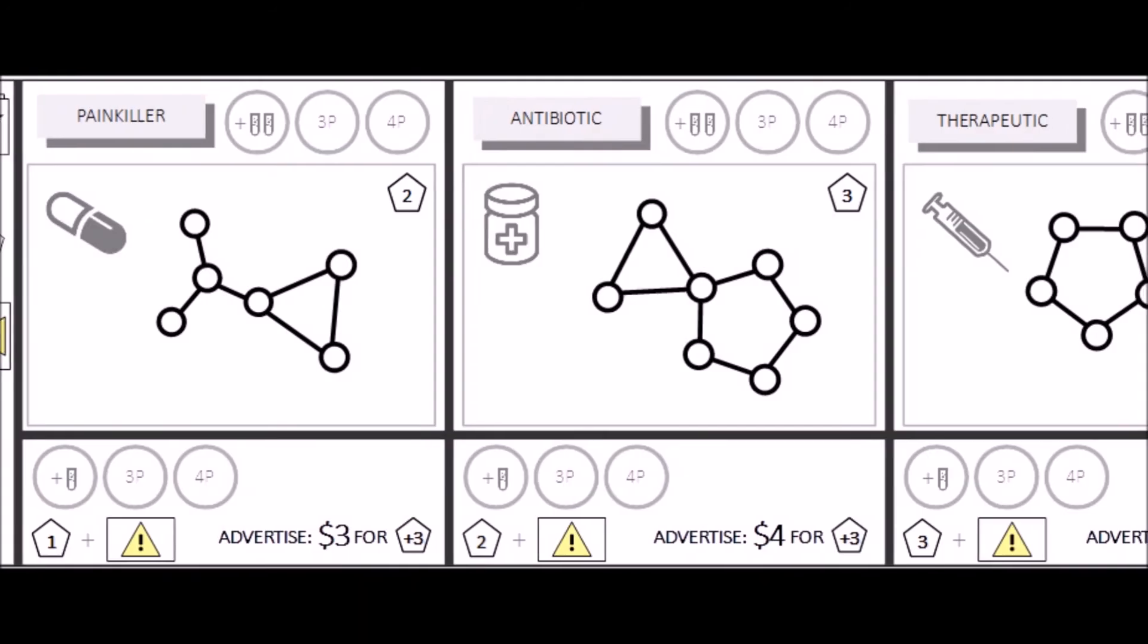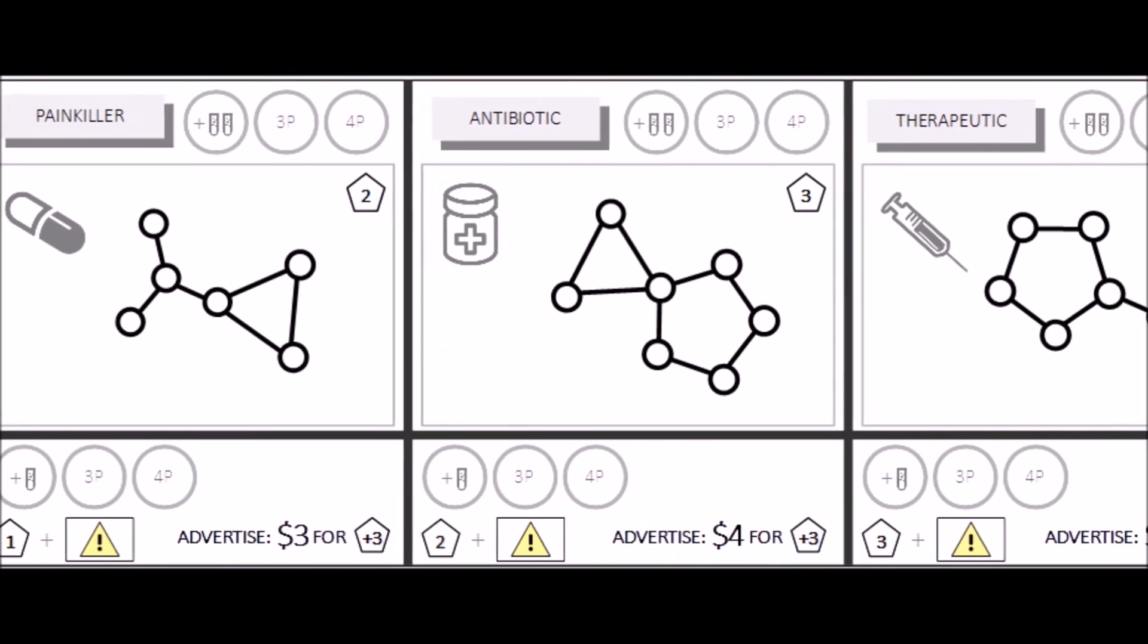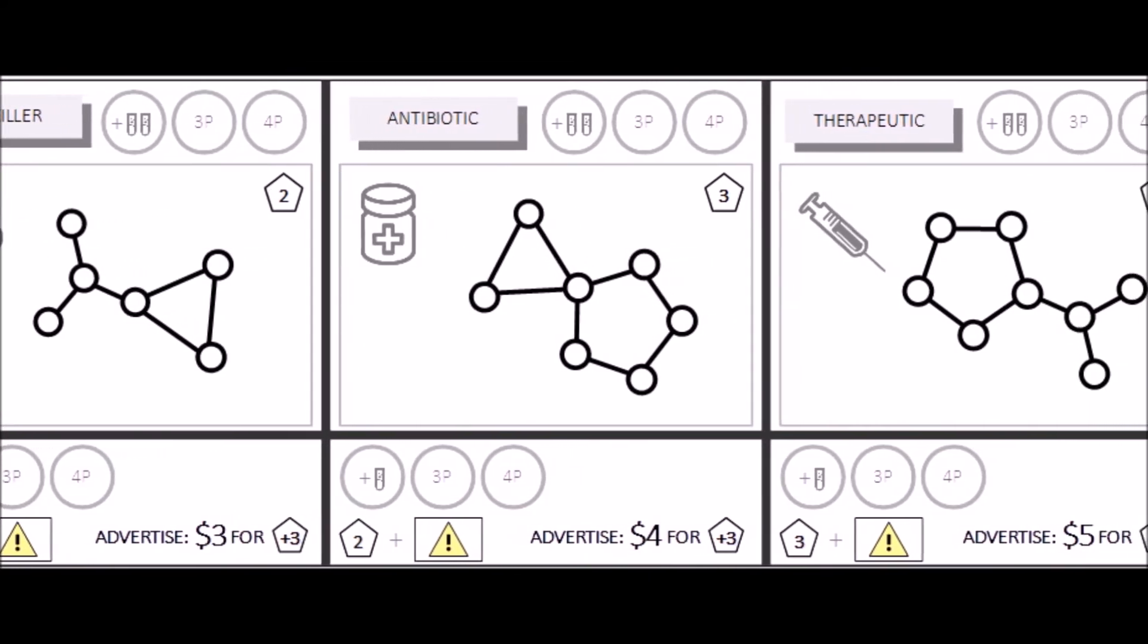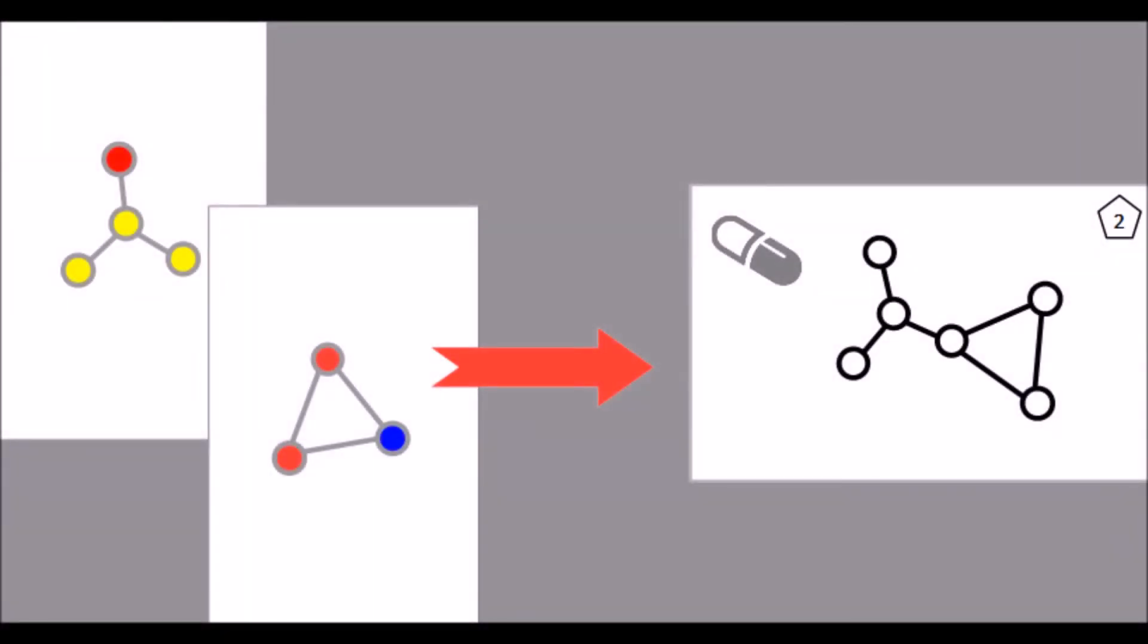These compound cards are used to develop and sell drugs, which rewards points on the profit board. To do this, you must pay the right combination of compound cards to develop a specific type of drug and get the corresponding profit points.